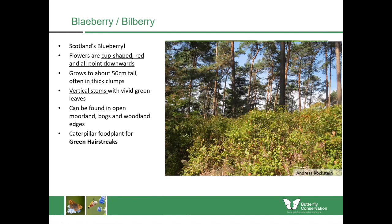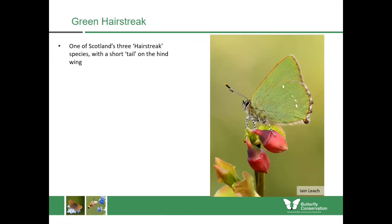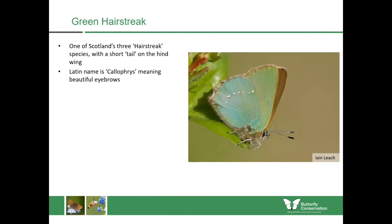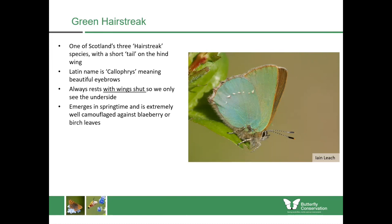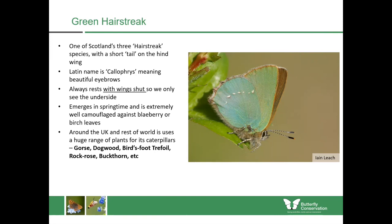Blaeberry is the main caterpillar food plant for the green hairstreak butterfly, one of Scotland's three hairstreak species, which all tend to have a short tail on the hind wing. The Latin name callifrus means 'beautiful eyebrows'. This butterfly always rests with its wings shut, so we only ever see the underside. The upper wings are brown and silvery in flight, but when it lands it closes its wings and becomes very well camouflaged against blaeberry or other nearby plants. In Scotland they're mostly associated with places where blaeberry grows, but might also use gorse in some coastal areas.